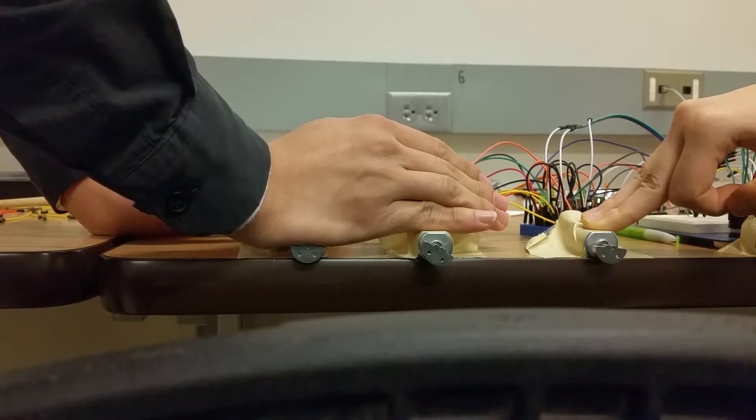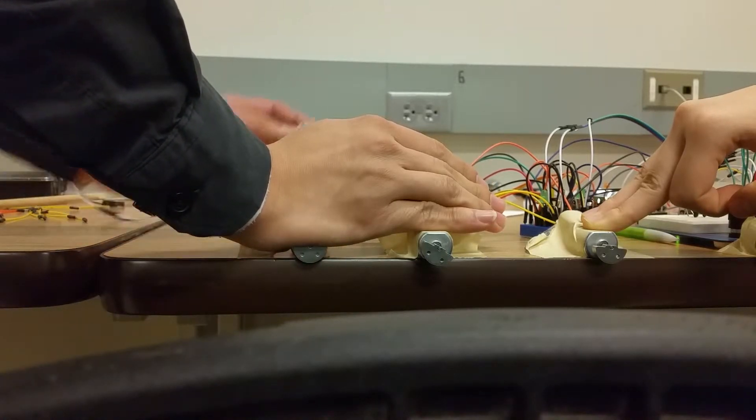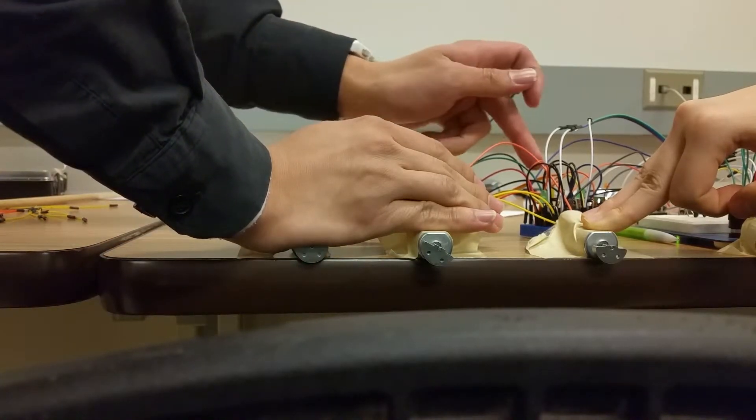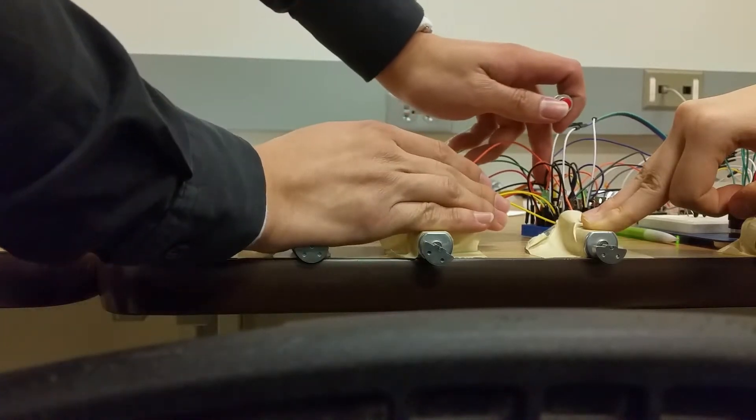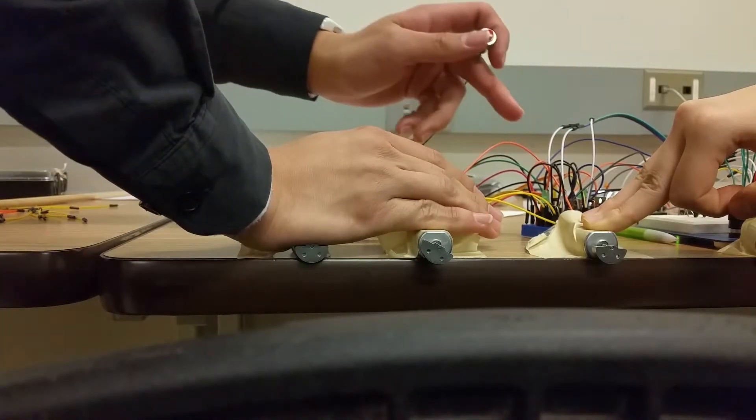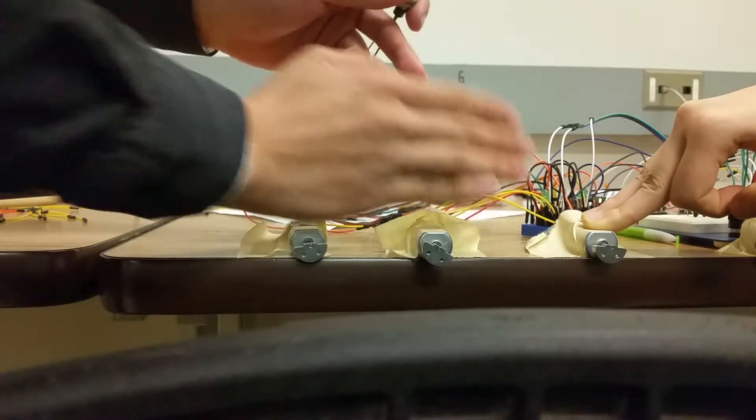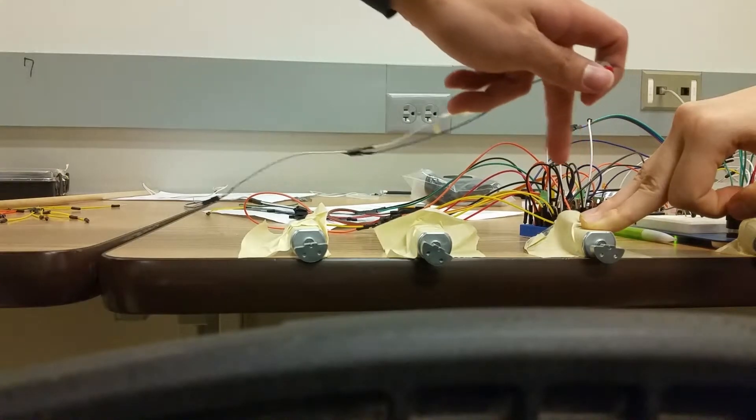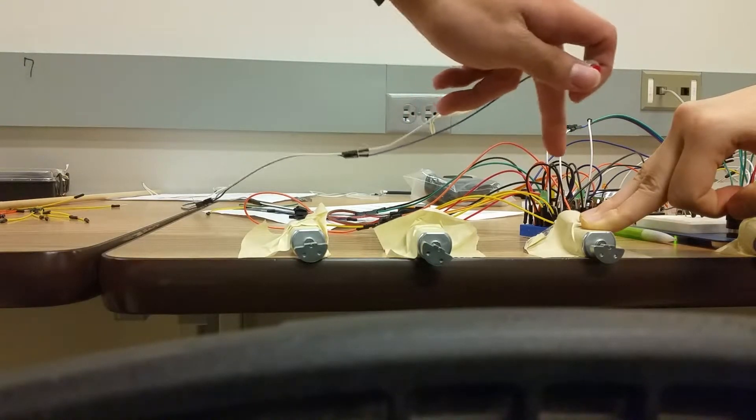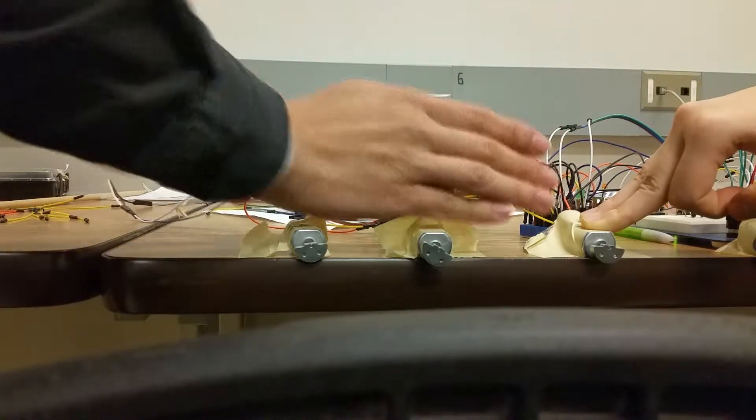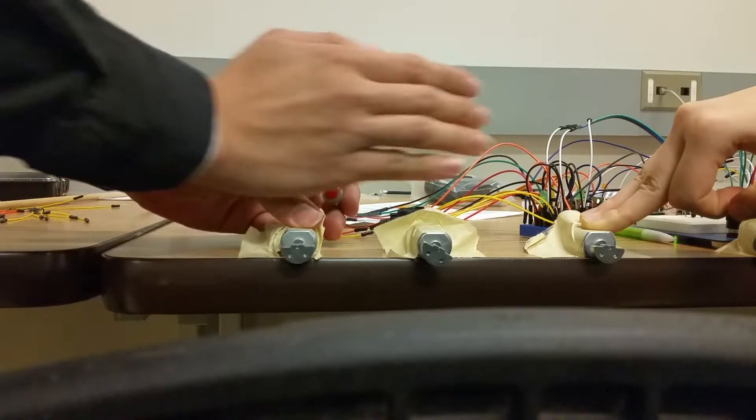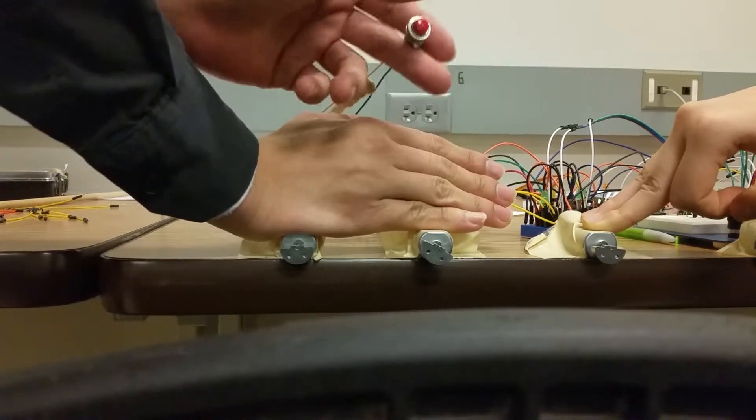You can check the push button is enabled by looking at this yellow pin. I don't know if it is visible in the video. You can check that every motor is enabled with the three LEDs that are right here. Here we are going to test it, so I'm pushing the button.